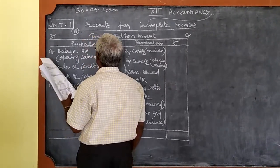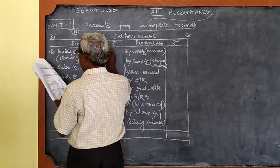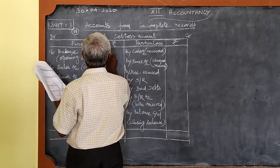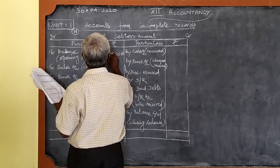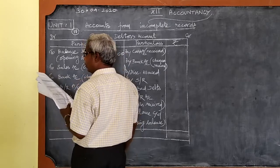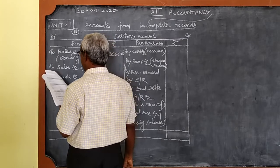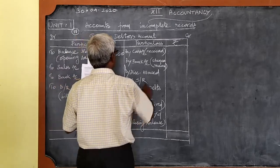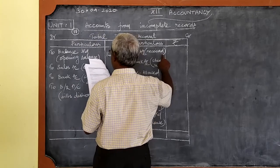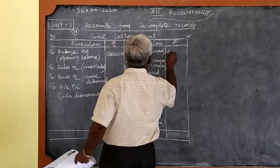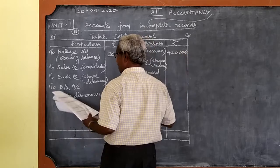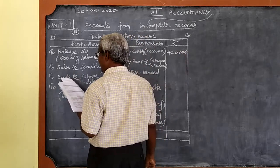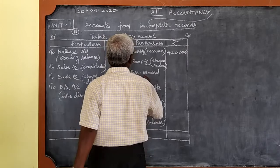That is opening debtor balance brought down 1 lakh 30,000. Cash received from debtors during the year 4 lakhs 20,000. Then sales return 35,000.